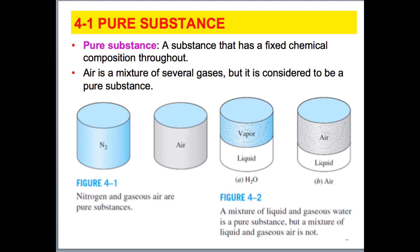On the right here we have a liquid-vapor mixture of water, and we have a liquid and air mixture in part B of this example. For the water mixture of liquid and vapor, we will consider that to be a pure substance. But a mixture of liquid and gaseous air is not, and that has to do with the different compositions of the air.